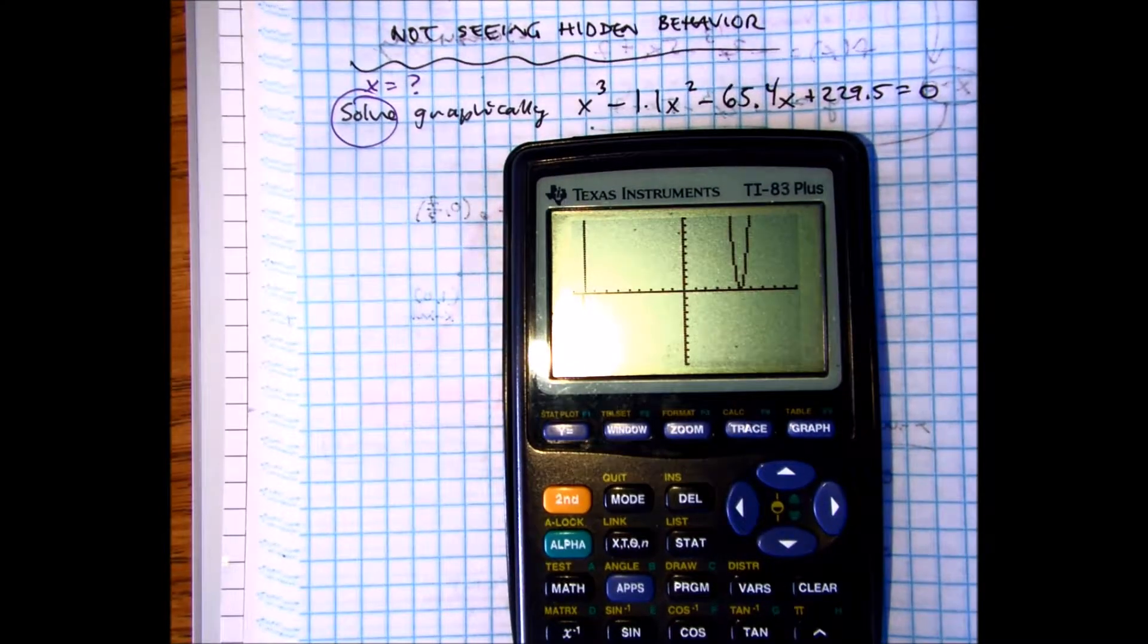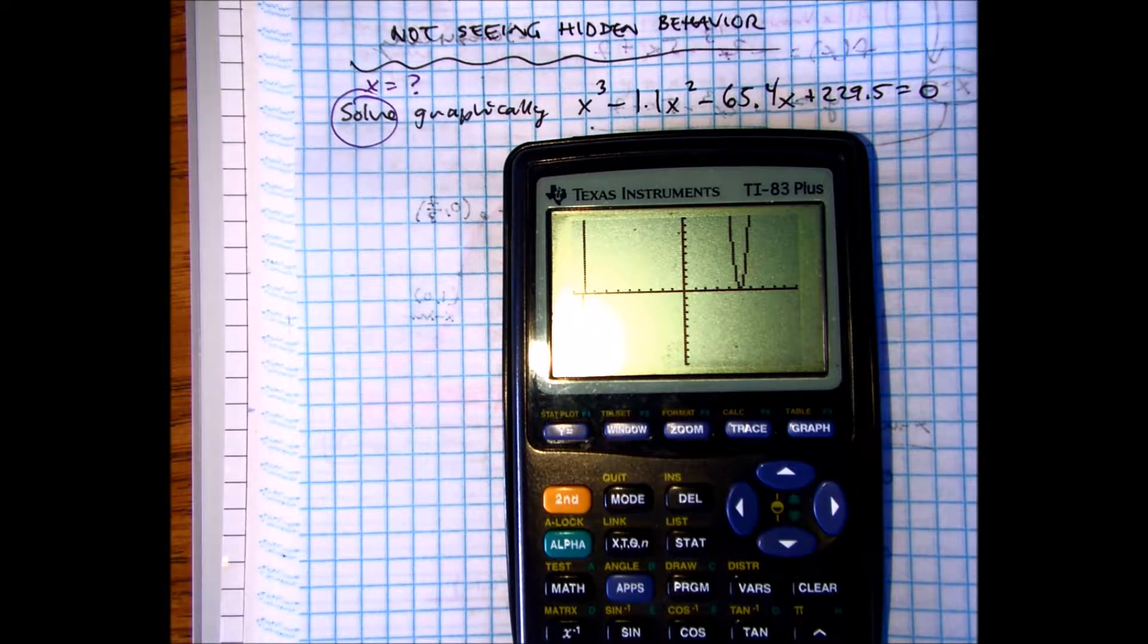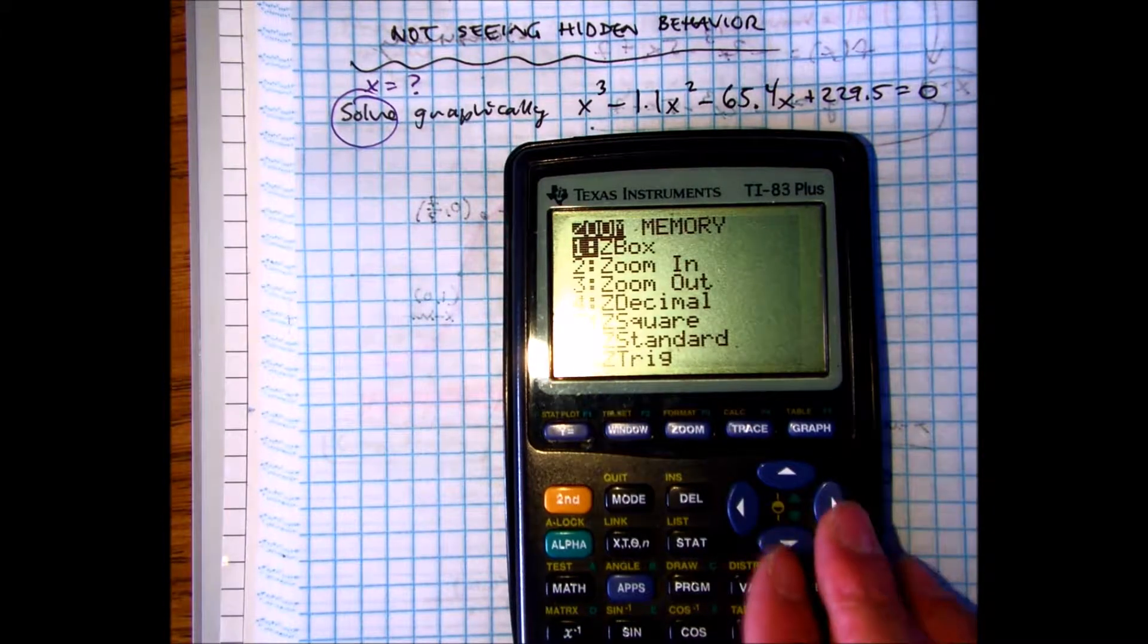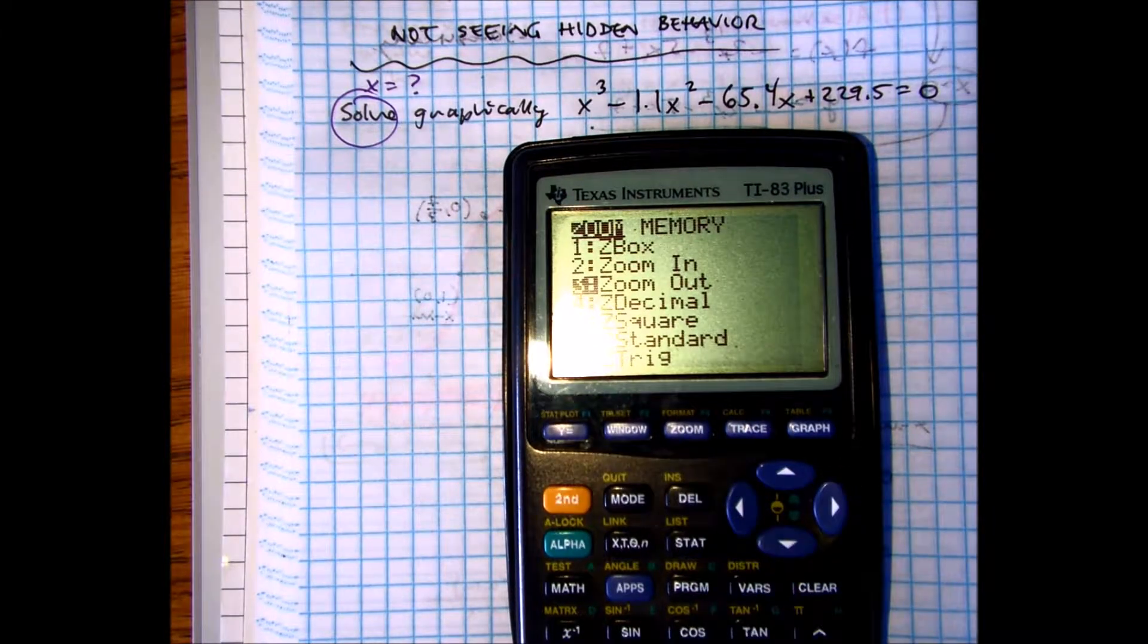We can't see the whole graph, so what we're going to have to do is, this is the harder part for students, is changing the window. Now, it would be foolish to zoom out because zooming out focuses on just the origin. If you keep zooming out, it may not be an accurate picture.